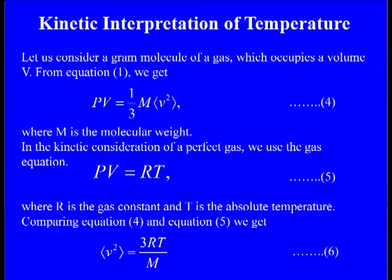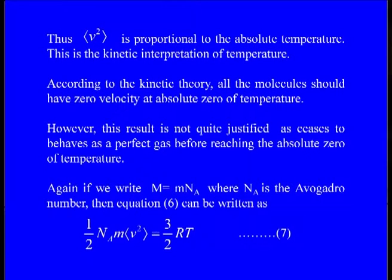If you compare the two equations, the average of V² — the root mean square velocity — comes out to be 3RT/m, where R is the universal gas constant and m is the mass of the gas. That means, if R and m are constant, then the average of V² is proportional to T, where T is the temperature. In other words, V² is proportional to the absolute temperature. This is the kinetic interpretation of temperature.